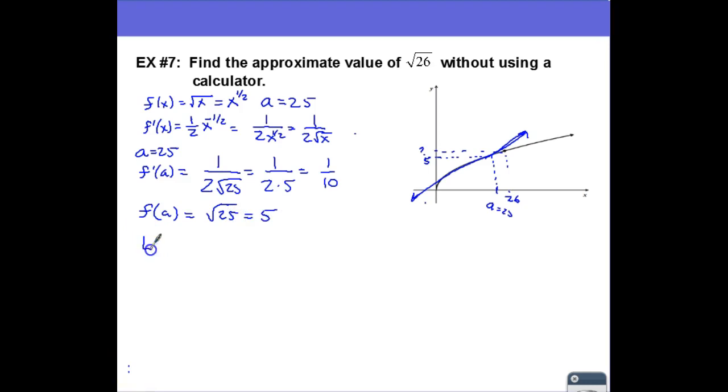Now we can plug into our formula. L(x) is equal to f(a) plus f prime of a times (x minus a). So that's going to be f(a) is 5 plus f prime of a is 1 over 10 times x, which in this case our x value is 26—that's what we're trying to approximate—26 minus a, which is 25.